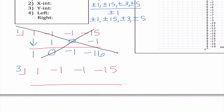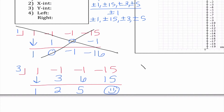I'm going to jump ahead and try 3. Keep in mind, if I kept trying things, I would know they didn't work if I wasn't getting 0 at the end. I'm bringing down the 1: 1 times 3 is 3, I get 2; 2 times 3 is 6, I get 5; 5 times 3 is 15 — and we are so happy there. Every time we use synthetic division, it goes down one degree. Our original problem was x cubed, so this becomes x squared plus 2x plus 5 equals 0.